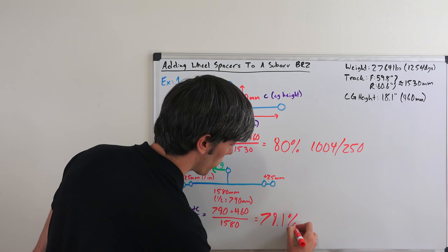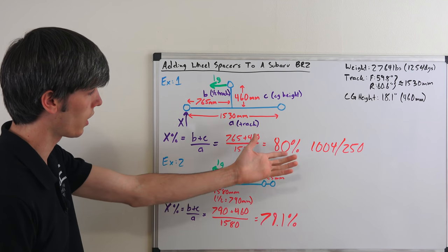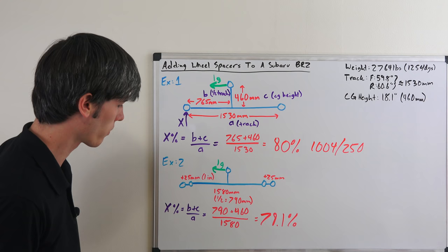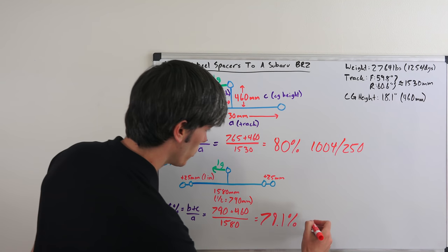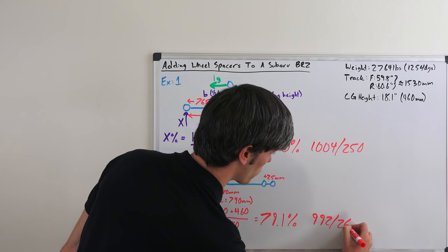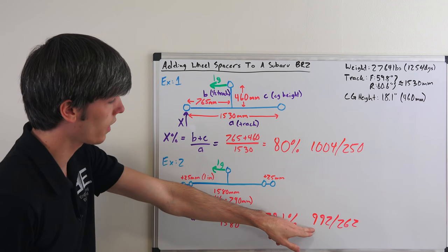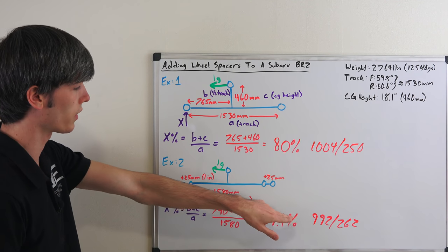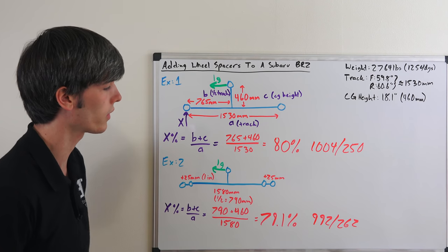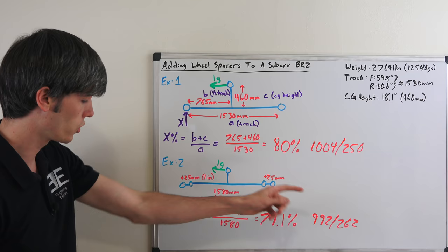79.1%, so not a dramatic change—less than 1% load transfer overall difference that we've got going on here. What does that look like once you multiply it out? 992 and then 262, so 992 kilograms on the left side split between the two left wheels, 262 kilograms on the right side split between the two right wheels.